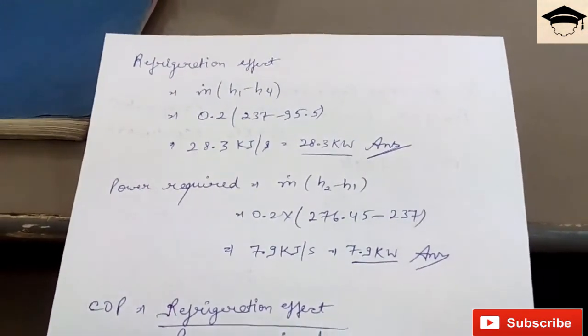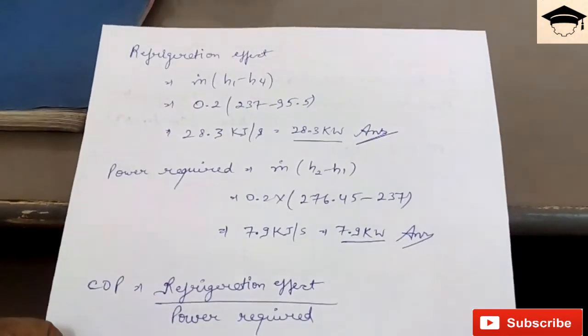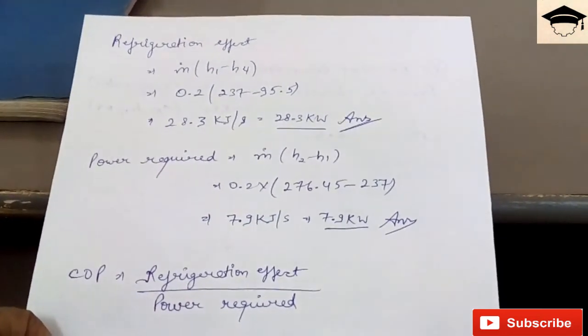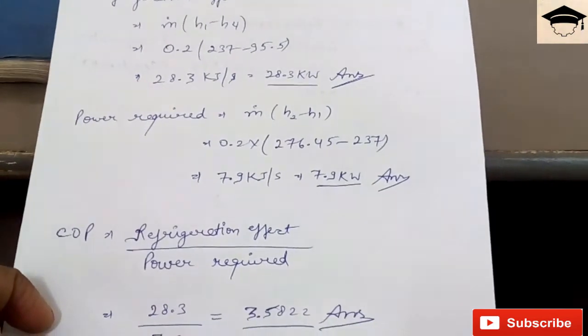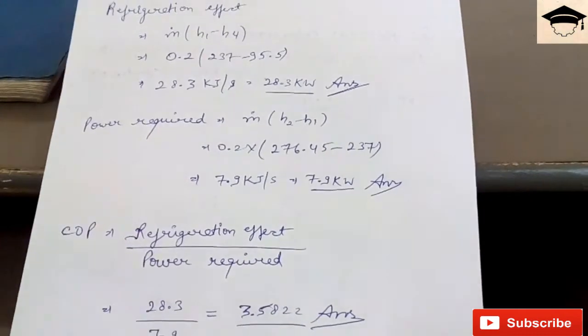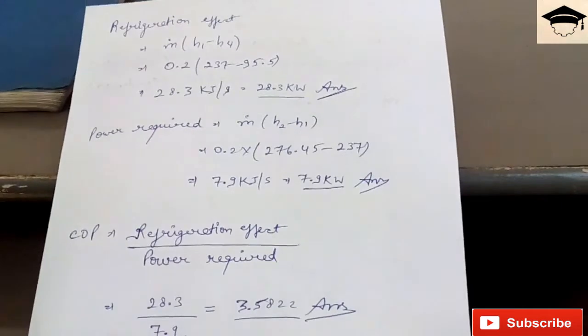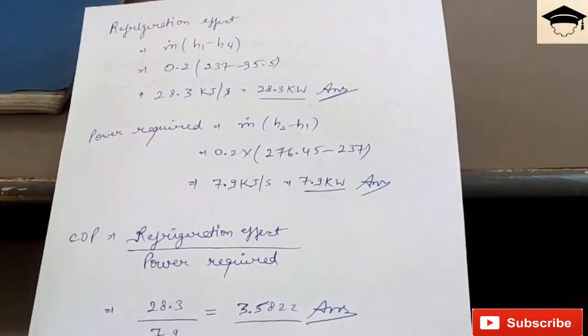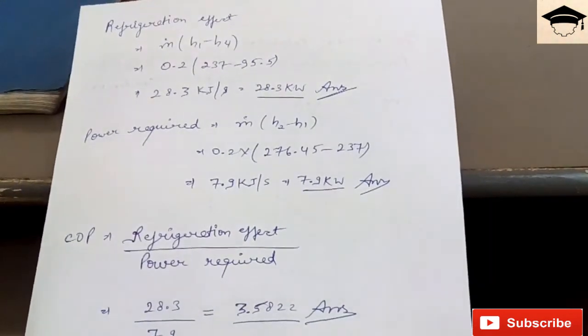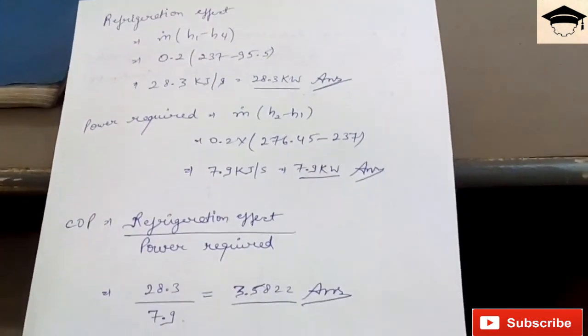So basically any type of questions regarding refrigeration cycles employing VCRS cycles or vapor compression refrigeration system cycles can be solved in a similar way. In many questions they change the refrigerant. The refrigerant can be R12, R22, R134a, CO2, or any refrigerant. Similarly you have charts for all the refrigerants.